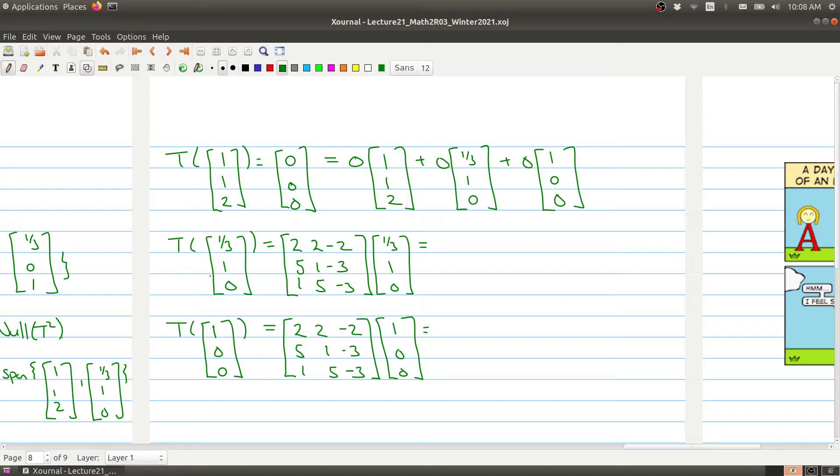Now let's figure out where t sends our second basis element. It sends 1, 1/3, 1, 0. Well, you take the matrix and multiply it by that vector. And you get the vector 8/3, 8/3, and 16/3. And if you rewrite it in terms of your basis element,